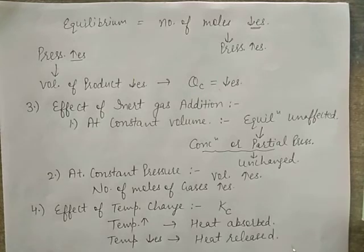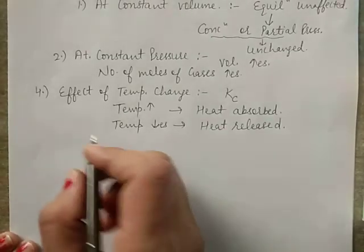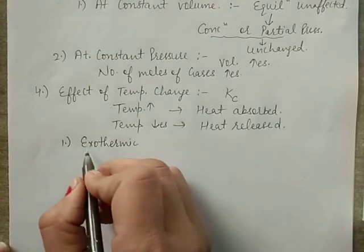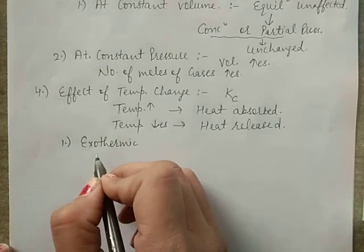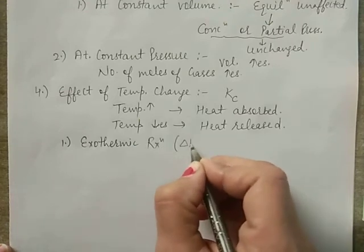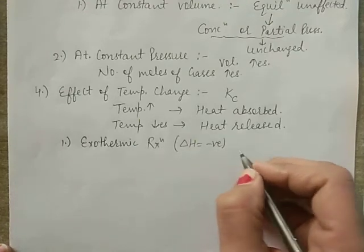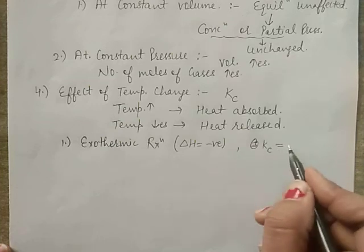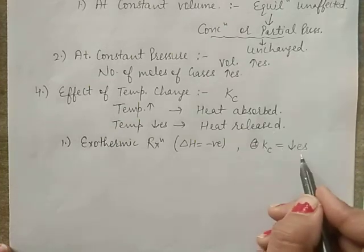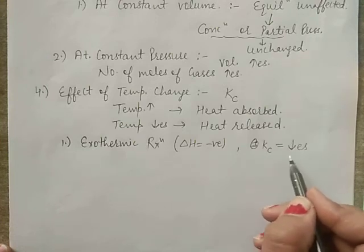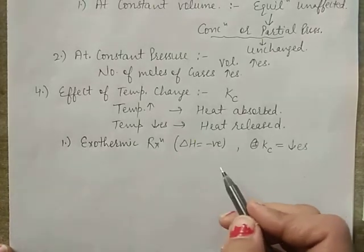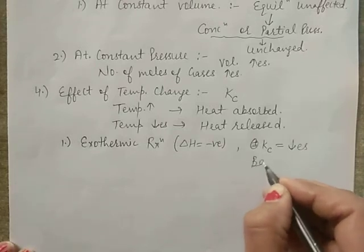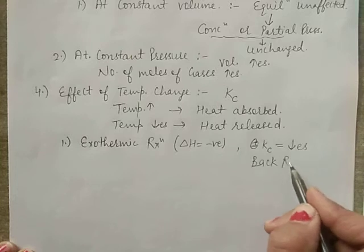Two cases: In an exothermic reaction (ΔH is negative), as temperature increases, the equilibrium constant Kc decreases, and the reaction proceeds in the backward direction.